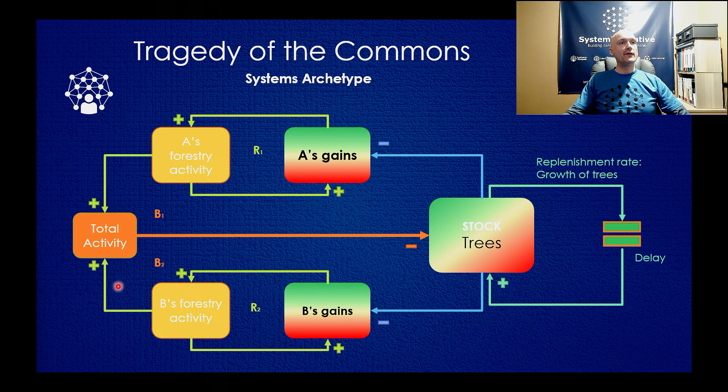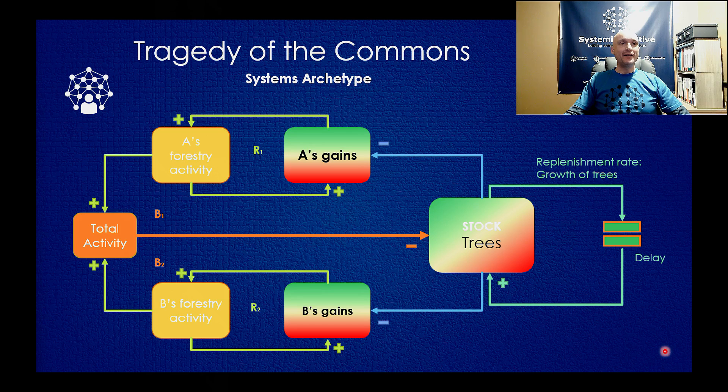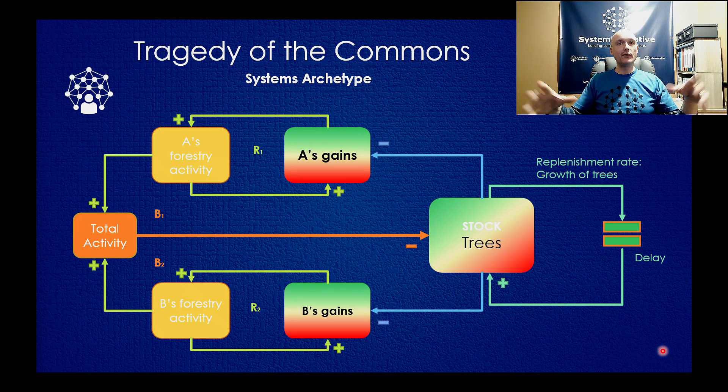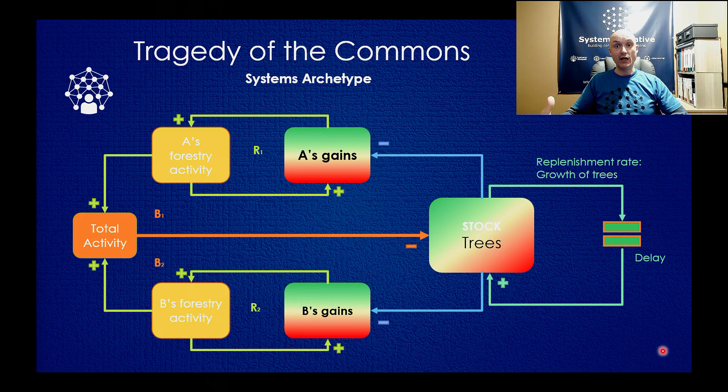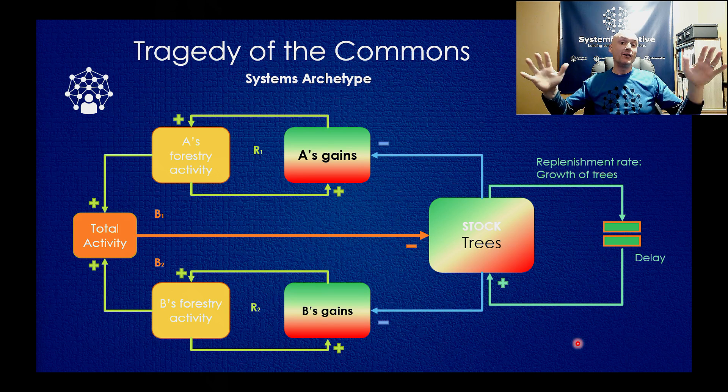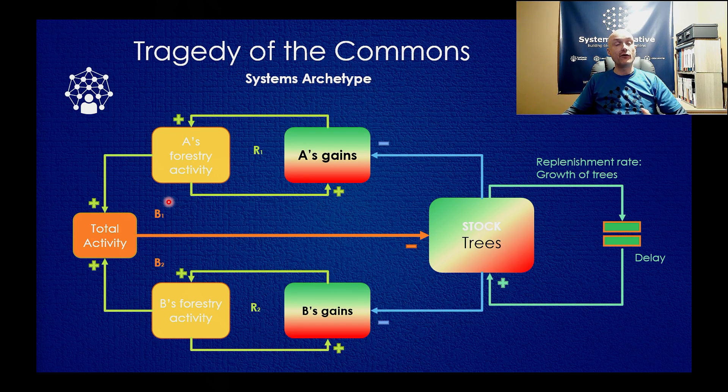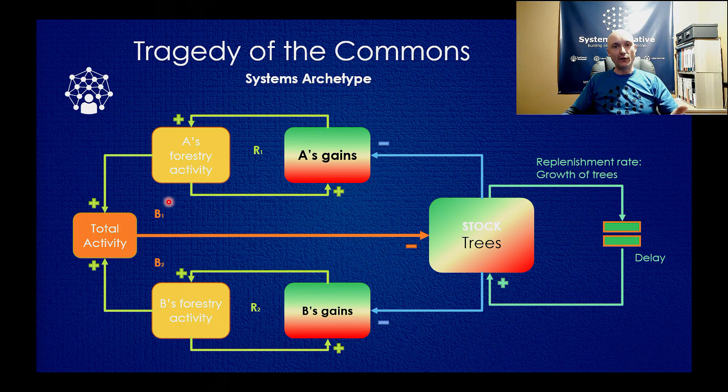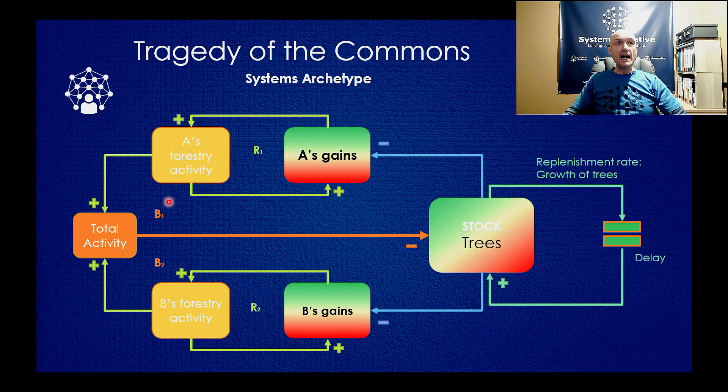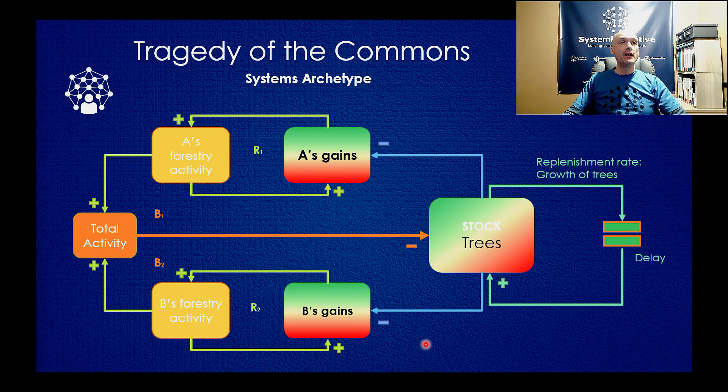So here we have the systems diagram. And it's an example, rather than using arbitrary labels, I always think it's useful to use an example. And this example is a forestry operation, or multiple forestry operations in a single forest or a single area of forest. So here we've got two companies. Now, it can be any number of companies, really, but it's simple just to look at two, but exactly the same principles apply if it's more than that. So you've got company A and company B.